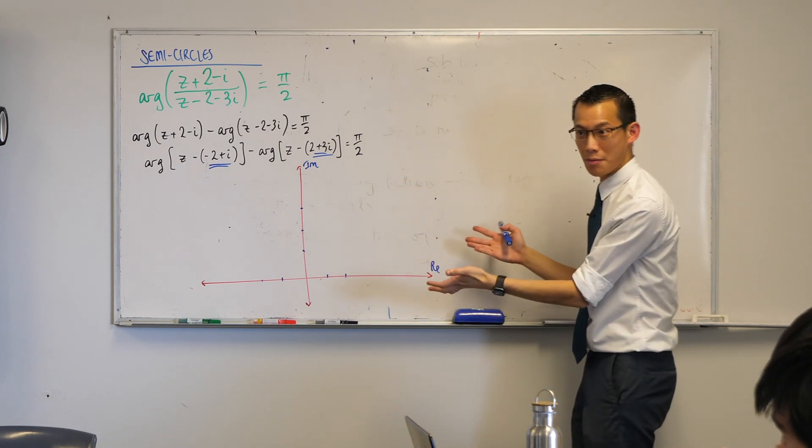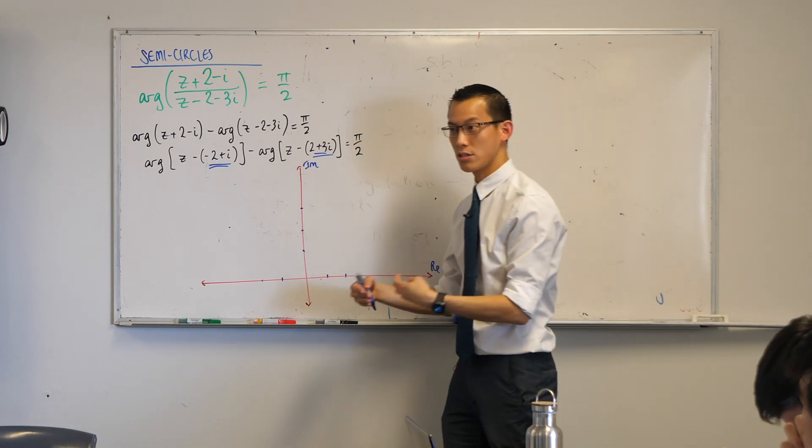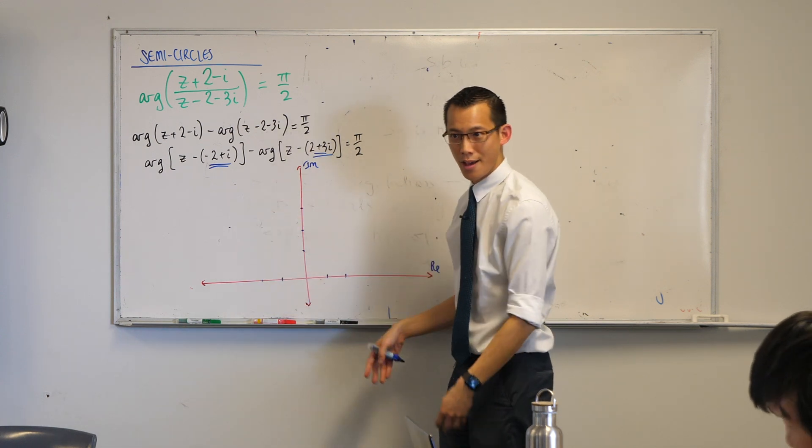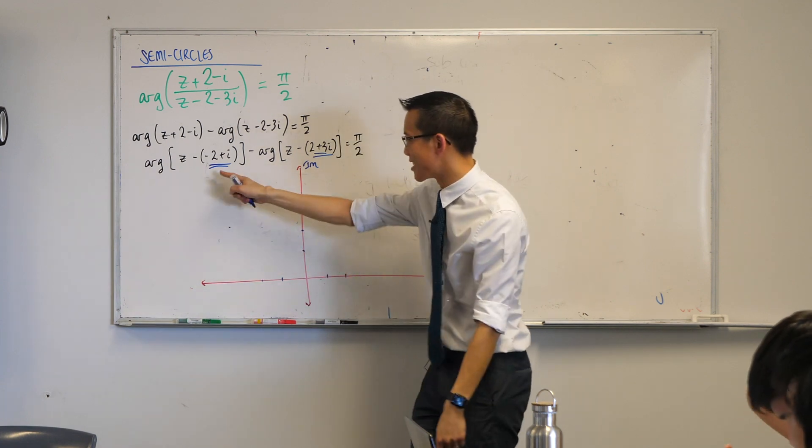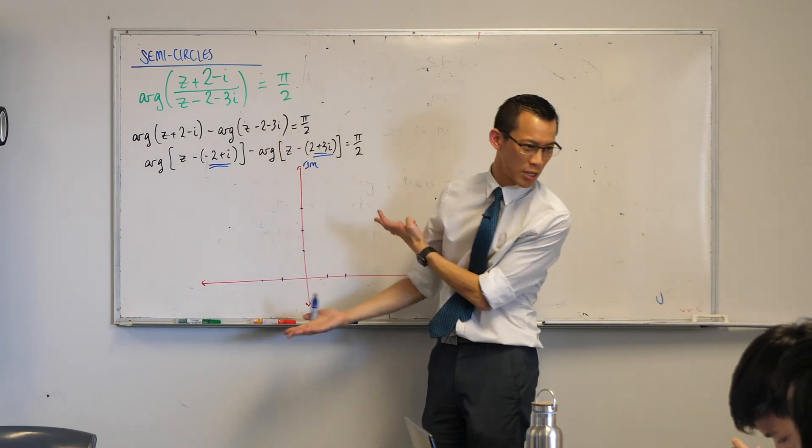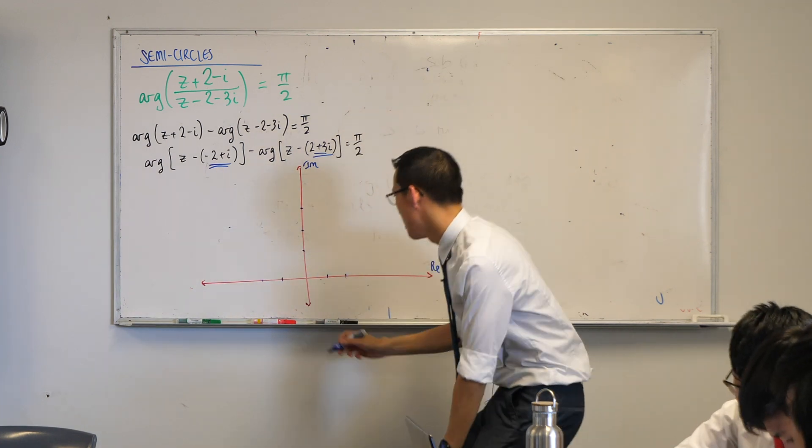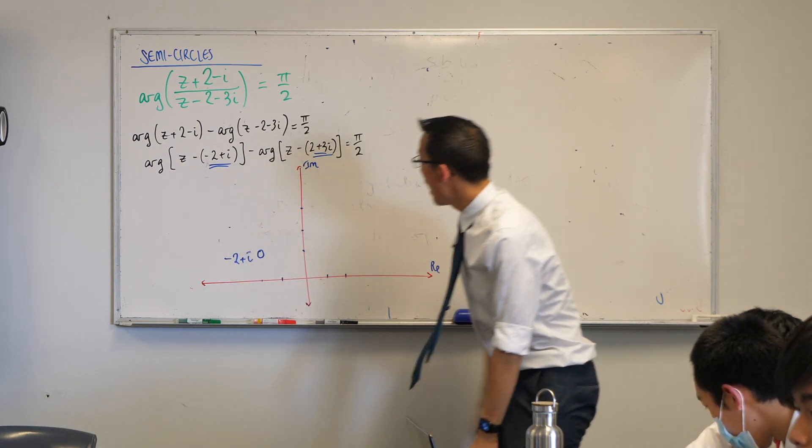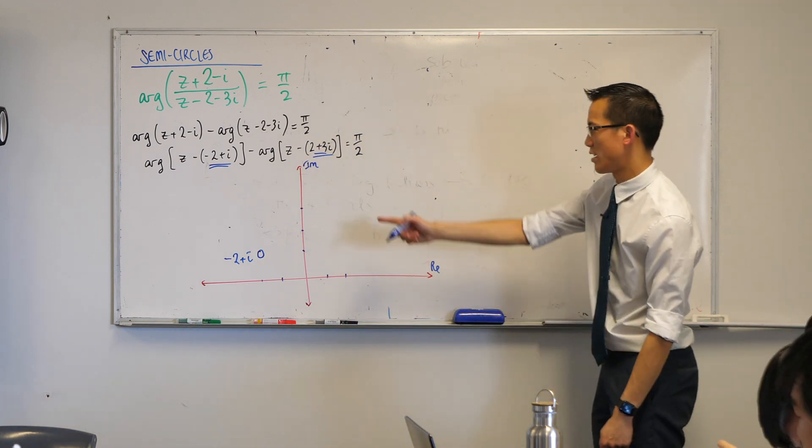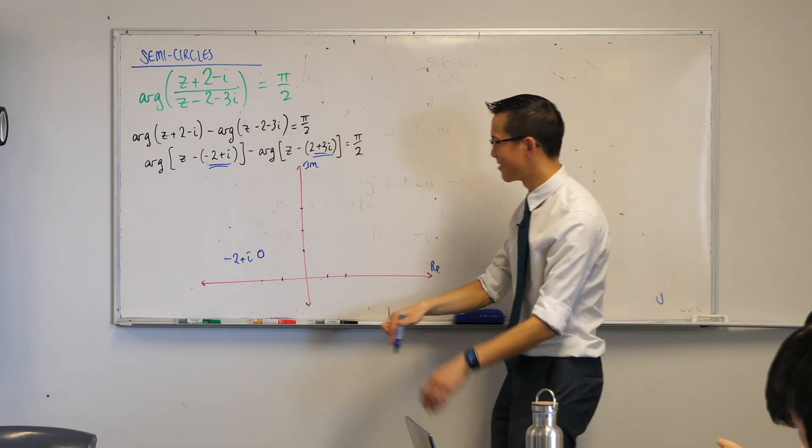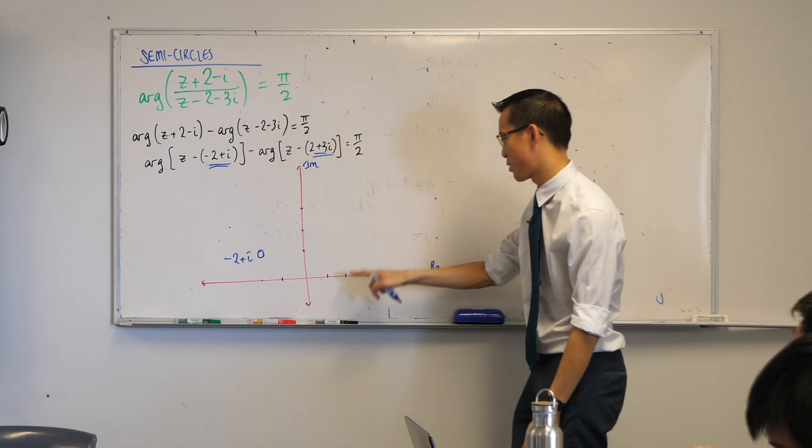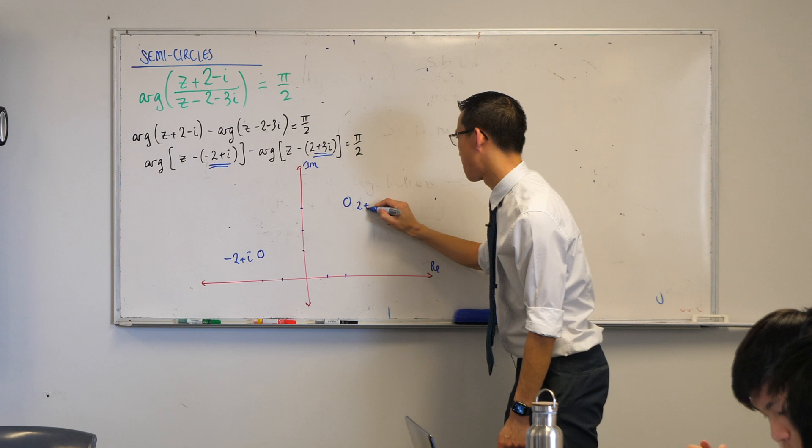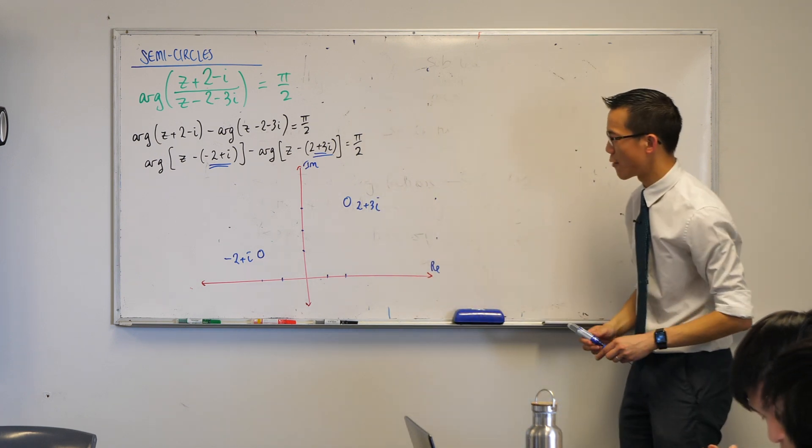Now I am ready to start putting on my Argand diagram, where is minus two plus i? I'm going to be over here in the second quadrant. Now that we know in advance that these reference points are going to be hollow circles, I might as well plot them as hollow circles now. So I'm going to go ahead and put that one right there, and then I've also got two plus three i, so here's two, and then I'm going to go up to three, so I'll put it there. Hollow circles are ready.